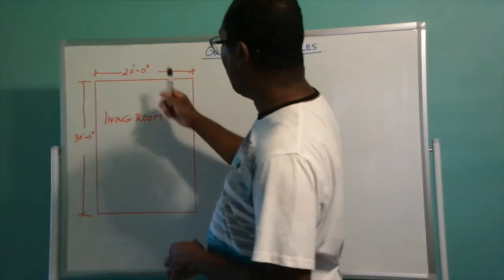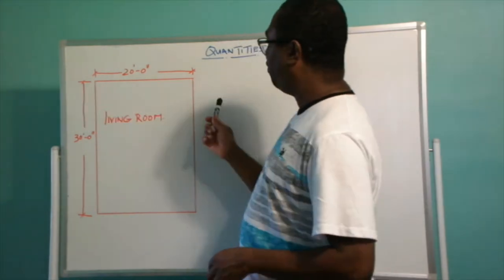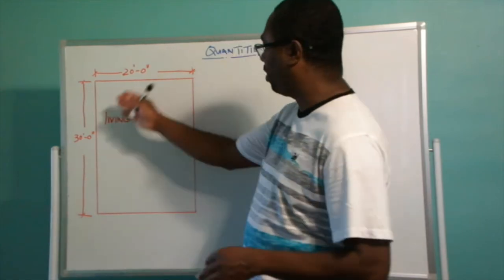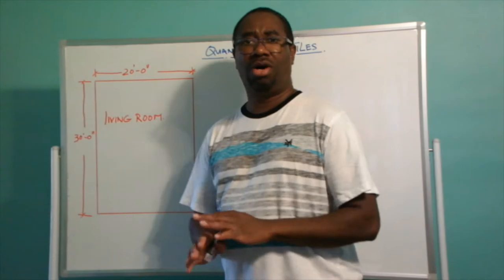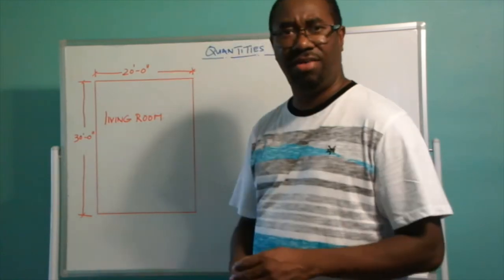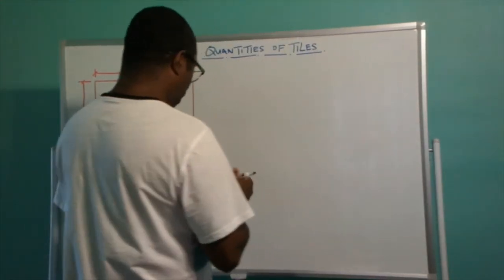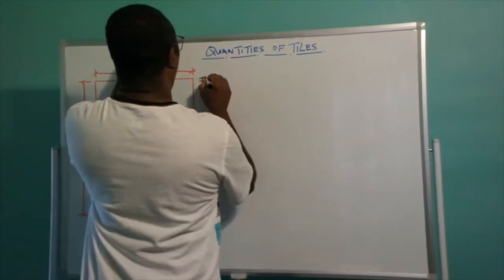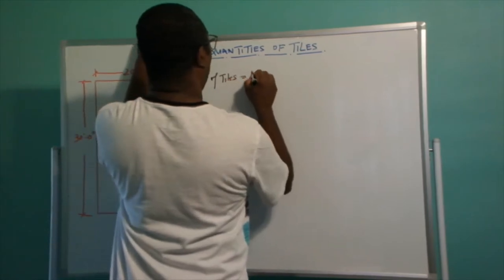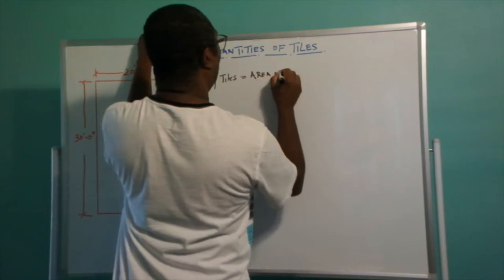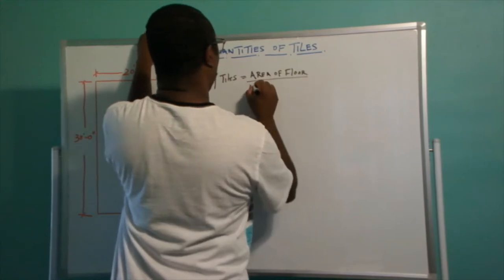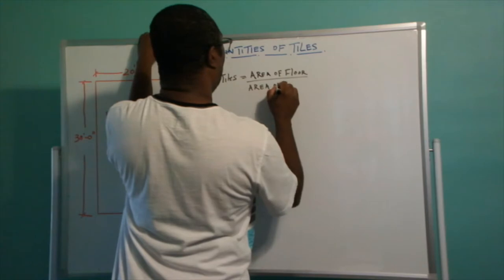Here we have a floor space of 20 feet in width and 30 feet in length. In my estimation, this is the typical size of a living room, so I am going to be working out the amount of tiles it is going to take to cover this living room. The number of tiles is going to equal the area of floor divided by the area of tiles.